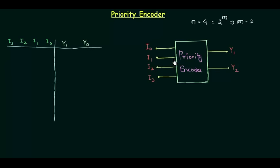What we have to do in this presentation is find out the circuitry inside this block. We will do that by first creating the truth table for the priority encoder, and then using the K-map we will find out the logical expression. The implementation part you will have to do yourself, because it's not a very tough thing to do at this stage.